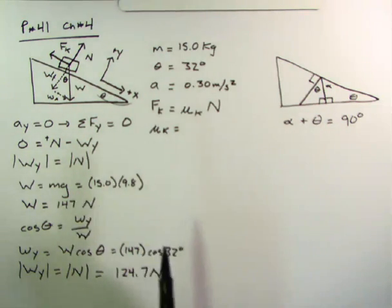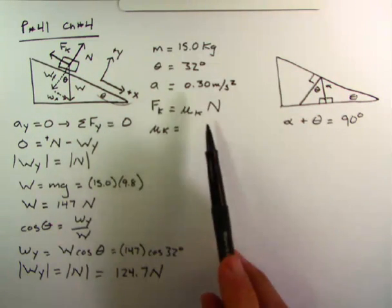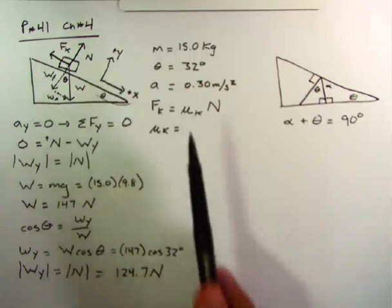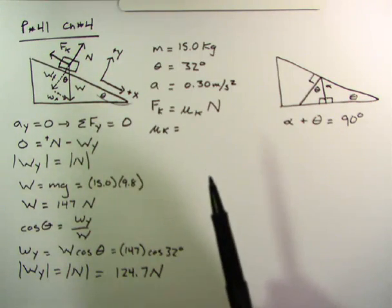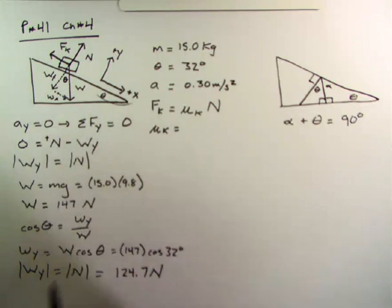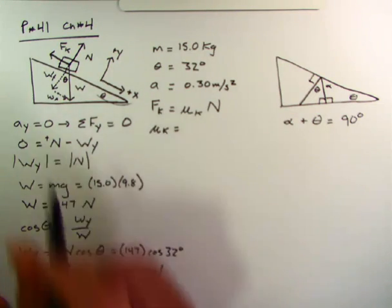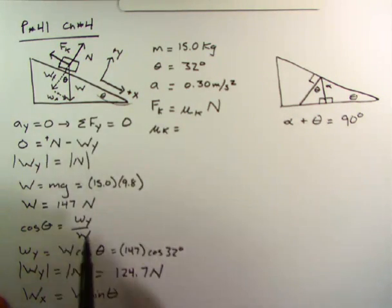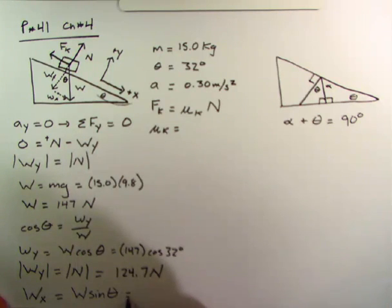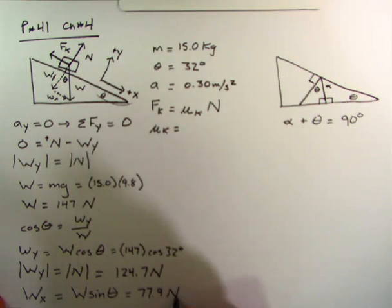Back to my problem here. What is my plan? I am going to find all of these different things in here. For instance, I found w y was w cosine theta. Well, wouldn't w x be equal to w sine theta then? If I looked at this triangle here, just as I found w y, I could find w x using a little sine theta. So if I plug that in, I would get for w x, 77.9 N.